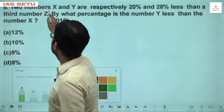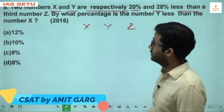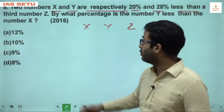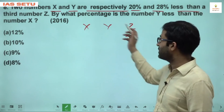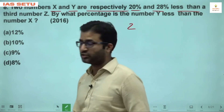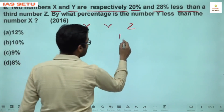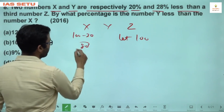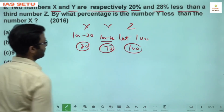Question 8: Two numbers X and Y are respectively 20% and 28% less than a third number Z. Assume Z = 100, so X = 100 − 20 = 80 and Y = 100 − 28 = 72. The question asks: by what percent is Y less than X? Difference = 8, reference = 80, so (8/80) × 100% = 10%.